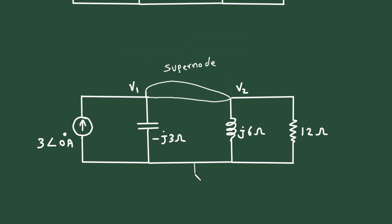Let's say this is the reference node with zero voltage. All the currents flow towards the reference node. Let's label them as current I1, current I2, and current I3.